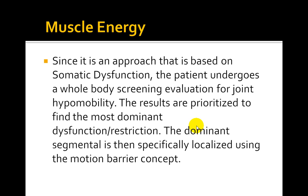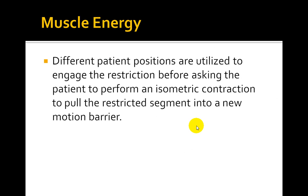Initially, you should make sure that you do a whole body screen and prioritize different dysfunctions according to the motion barrier concept. Different patient positions are utilized to engage the restriction before asking the patient to perform an isometric contraction to pull the restricted segment into a new motion barrier.